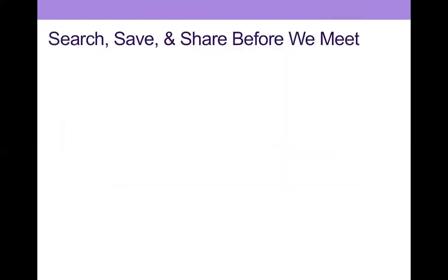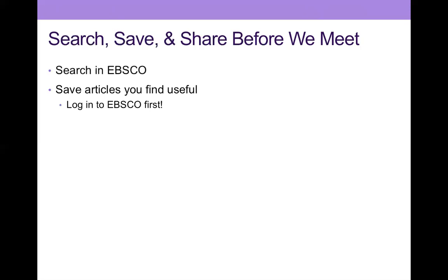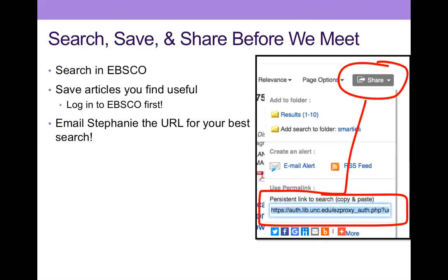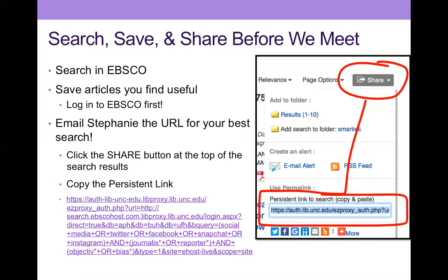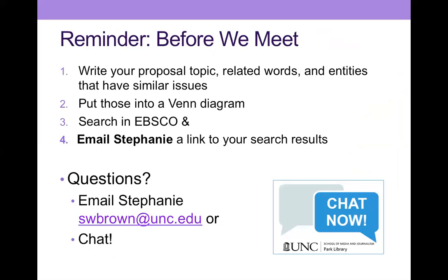So the short and sweet is: search, save, and share before we meet. Search in EBSCO, save articles that you find useful — make sure that you're logged into EBSCO first, because they won't save much longer than your search session. Email me the URL for your best search. To get that, on the search results page click the share button, and you can copy and paste the persistent URL. It's really long, but that's totally fine. As a review: write your proposal topics, related words, and entities that have similar issues, put them into a Venn diagram, search in EBSCO, and then send me a link to your search results.